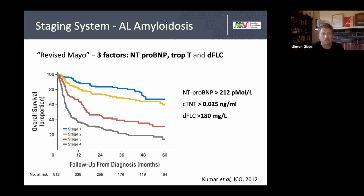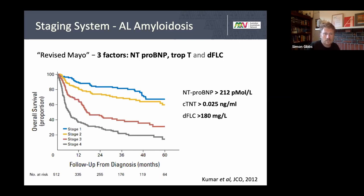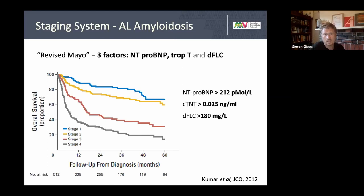For AL amyloidosis, the most commonly used staging system is the revised Mayo staging system, which uses troponin T, NT-proBNP, and the difference between the involved and uninvolved monoclonal serum free light chains. Stage 4 disease — shown on the gray survival curve — means half of patients will be dead within six months. If there is no significant cardiac involvement and NT-proBNP and troponin T are only mildly elevated, 75% of patients can live more than five years. This highlights that earlier diagnosis equates directly to better survival. Published in 2012, things have certainly improved for stages 1–3, though stage 4 remains a challenge.